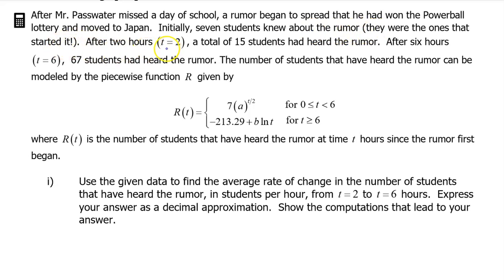After 2 hours, t equals 2, a total of 15 students had heard the rumor. After 6 hours, t equals 6, 67 students had heard the rumor. The number of students that have heard the rumor can be modeled by the piecewise function r, given by all of this, where r of t is the number of students that have heard the rumor at time t hours since the rumor first began.